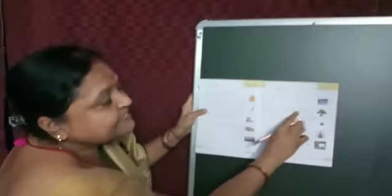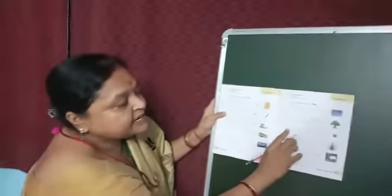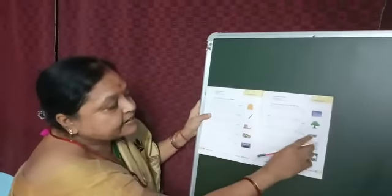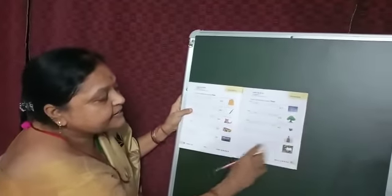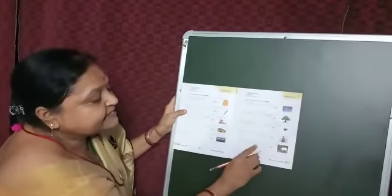That is a kite. That is a tree. That is a cup. That is a girl. That is a goat.